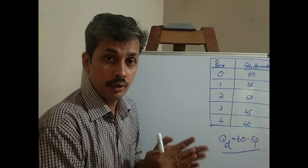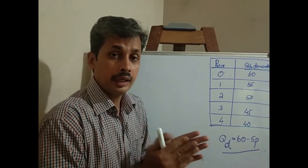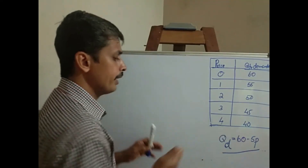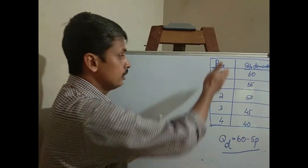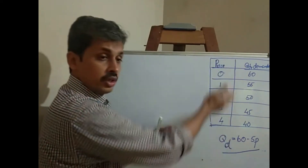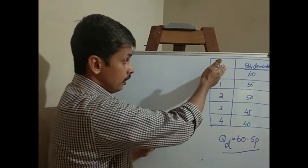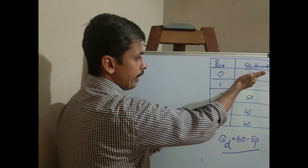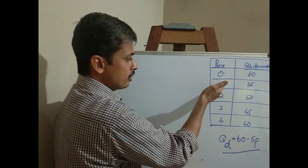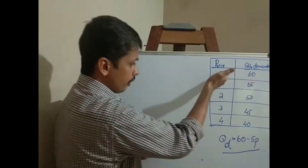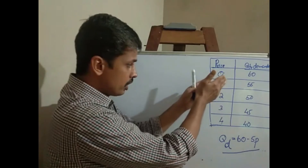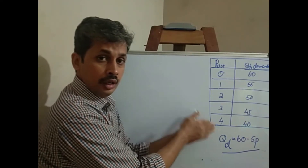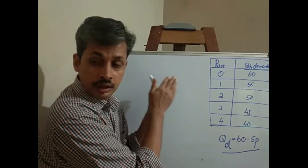Now, how can we express this linear demand function graphically? We have Qd equal to 60 minus 5P. We have a demand schedule: when price is 0, quantity demanded is 60; when price increases to 1, quantity demanded falls to 55, and so on. Now we are going to express this linear demand function graphically.